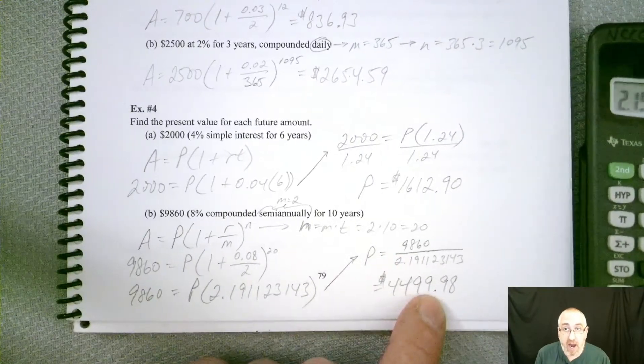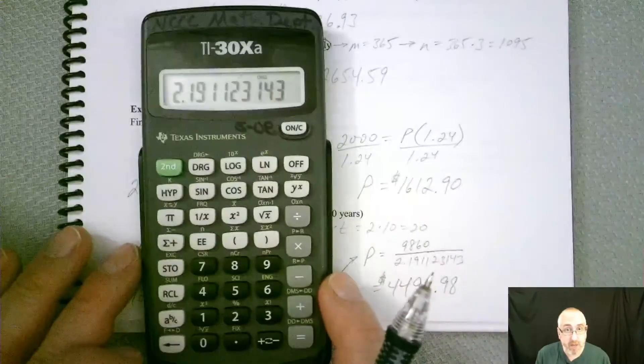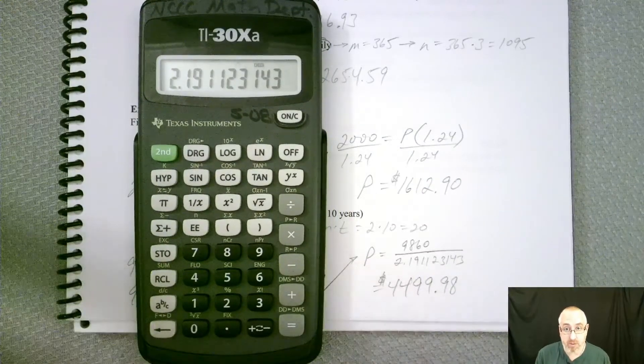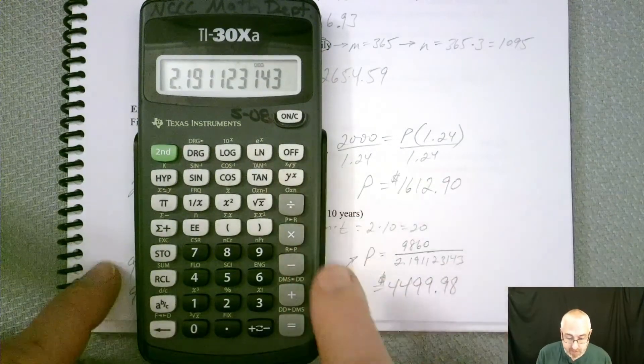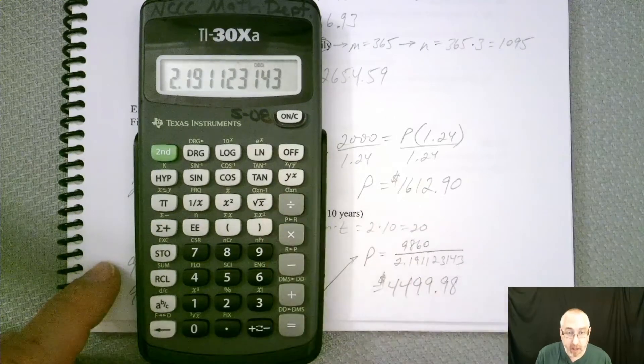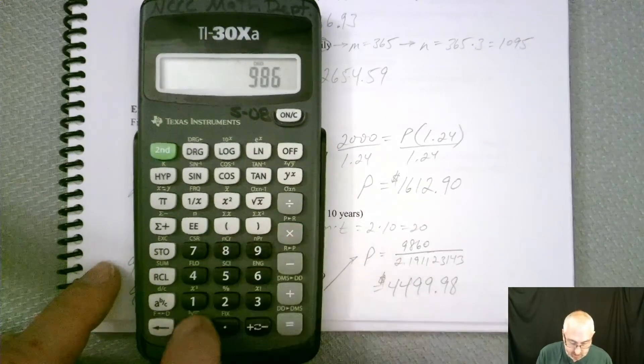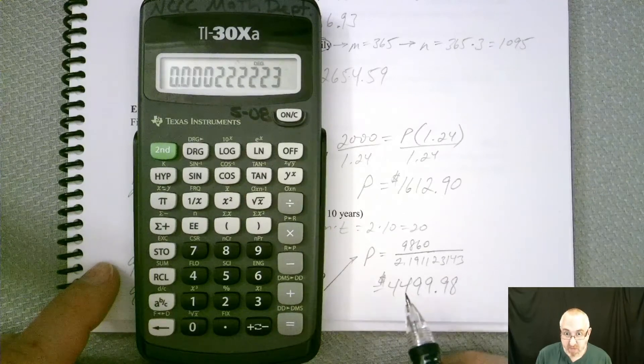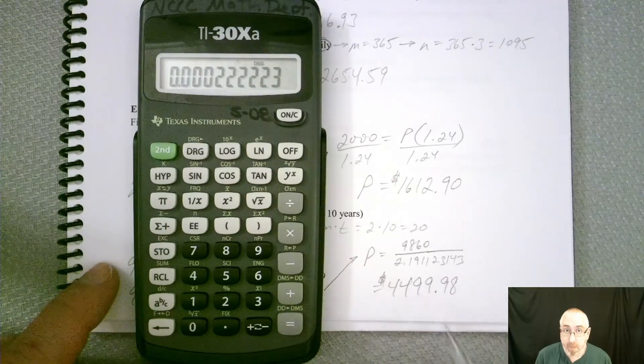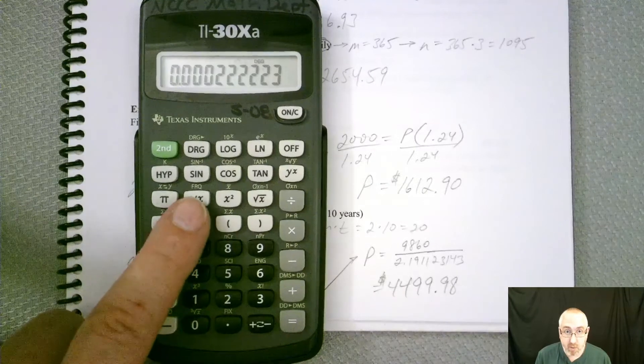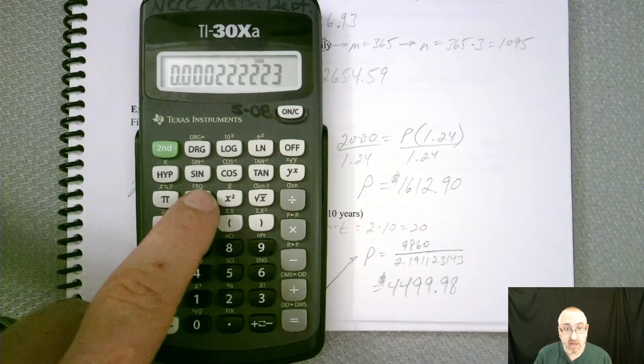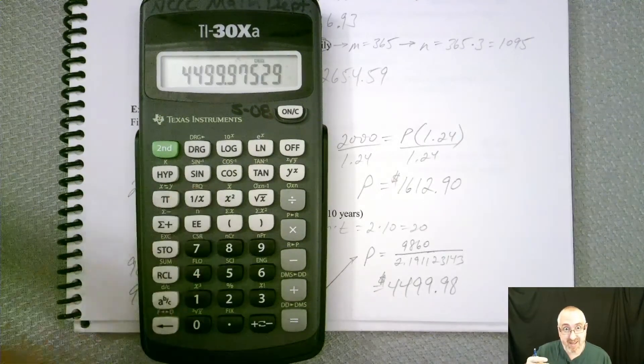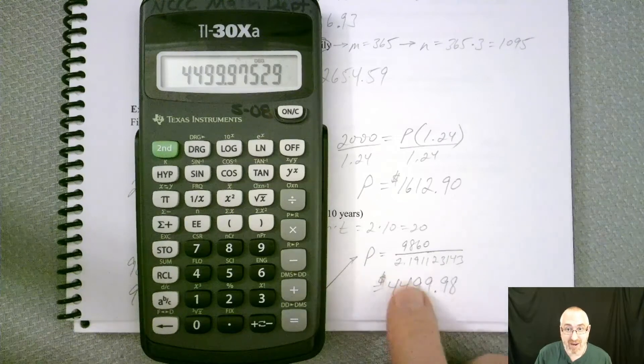If I wanted to get to this $4,499.98, I'm going to do something a little weird. I'm going to divide it backwards. I'm going to keep that number in there and divide by 9,860. Now that doesn't look anything like $4,499.98, but see this button here, one over X, that's going to flip it. And when it flips it, we get our answer.